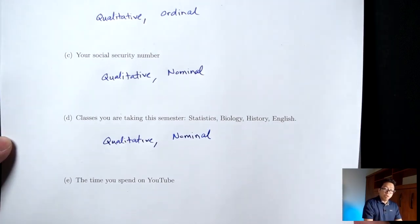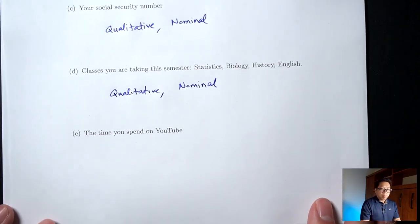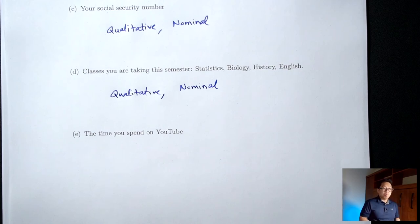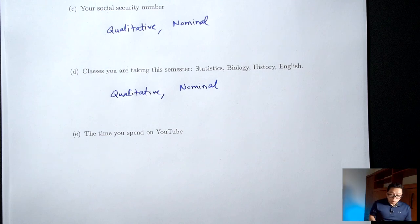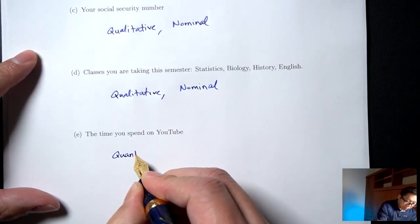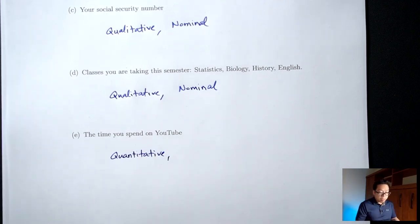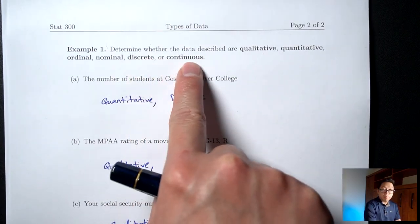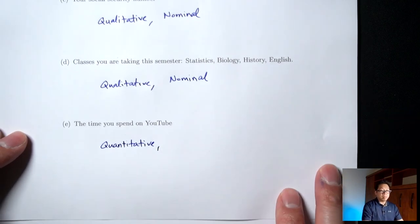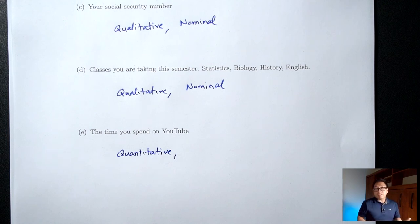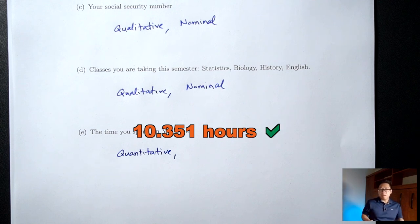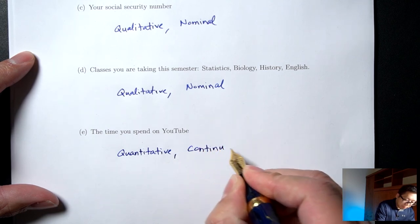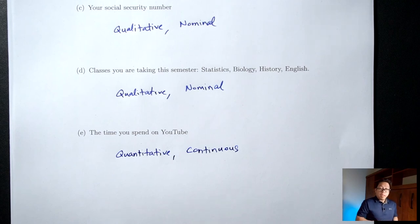Part E: the time you spend on YouTube, measured in hours. Would this number count or measure something? Yes — it's measuring how long you spend on YouTube, so it's quantitative. Would decimals make sense? Would it make sense to have 10.351 hours? Yes, that makes sense. So because the answer is yes, this is continuous. And that's all the different types of data. Have a great day and I'll see you in the next one.